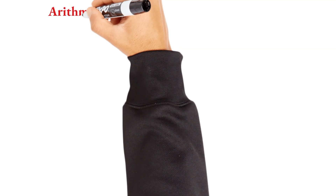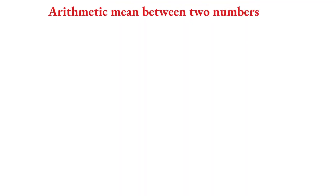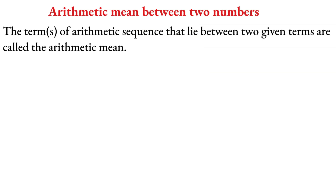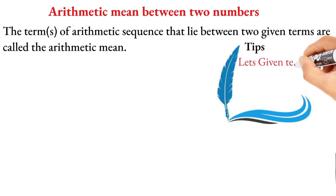What is the arithmetic mean between two numbers? The terms of an arithmetic sequence that lie between two given terms are called the arithmetic mean. For the sequence A, B, C, B is the arithmetic mean between A and C.